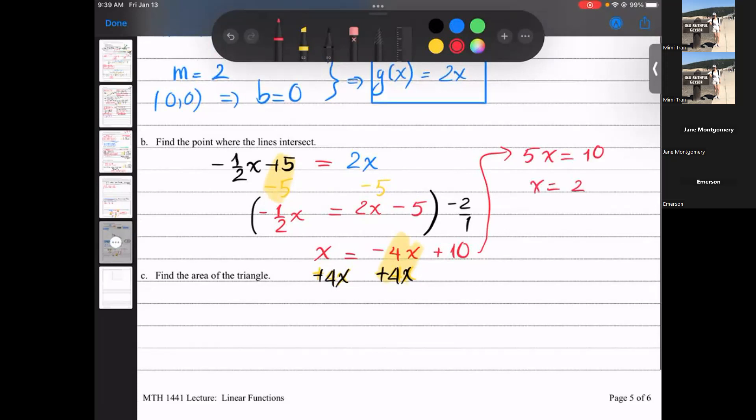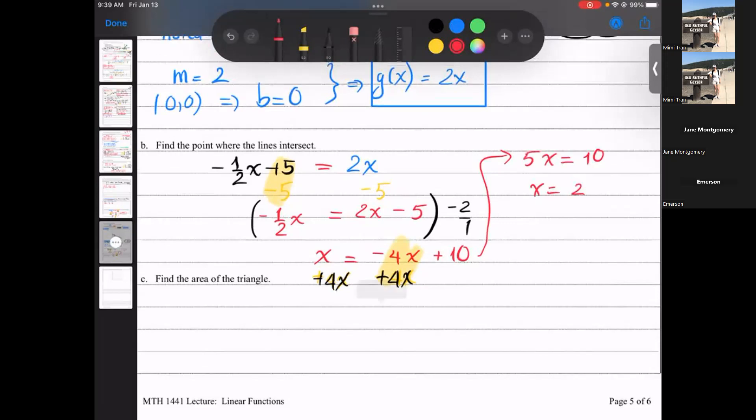Add 4x both sides. Then I have 5x equal 10. x equal 2. Are we done here?